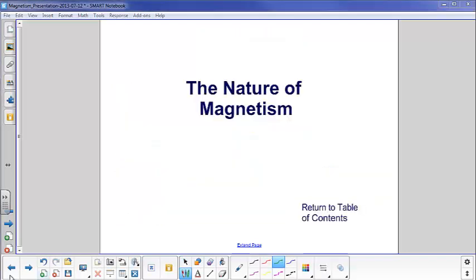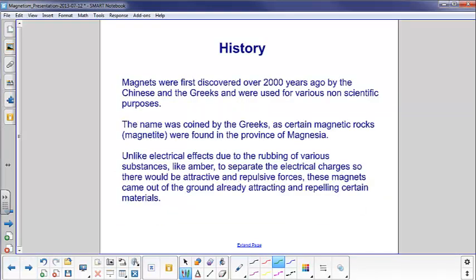The nature of magnetism. Magnets were first discovered over 2,000 years ago by the Chinese and the Greeks and were used for various non-scientific purposes. The name was coined by the Greeks as certain magnetic rocks, otherwise known as magnetite, were found in the province of Magnesia, hence the name magnetite.